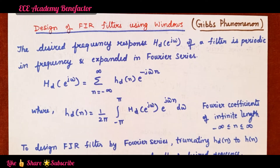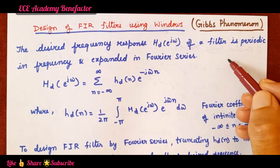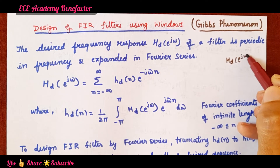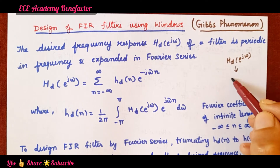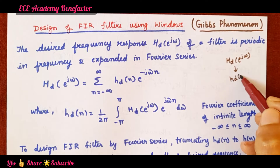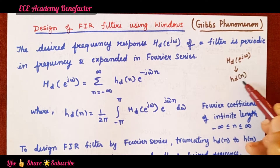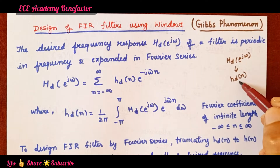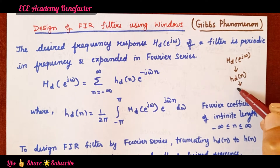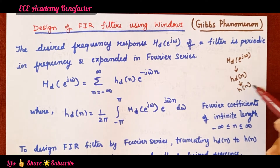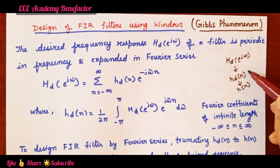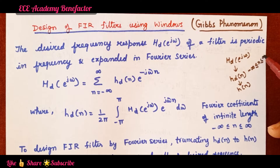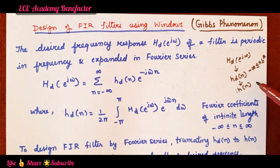When we are designing an FIR filter, what are the steps? From the desired frequency response H_d of omega, we find the desired impulse response. These are also known as Fourier coefficients. From this desired impulse response, we find the truncated impulse response, because this desired response is of infinite nature and we are designing FIR.